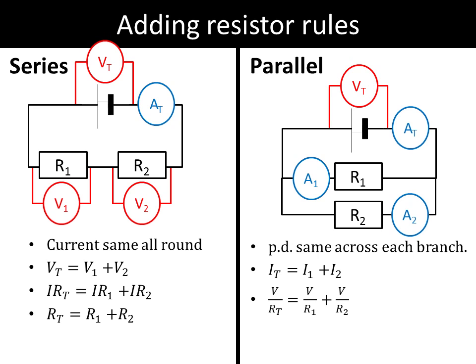So that gives us the voltage divided by RT, which is obviously the current going through the terminal, is equal to the voltage across R1 divided by the resistance of R1 added on to the voltage across R2 divided by the resistance of R2.